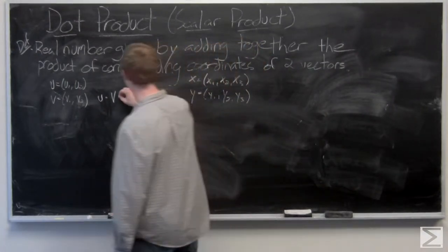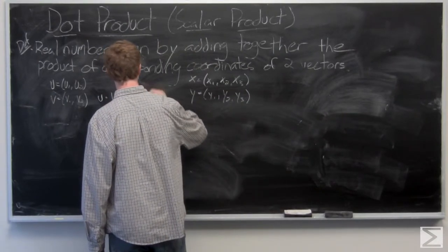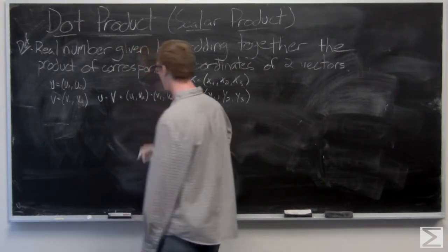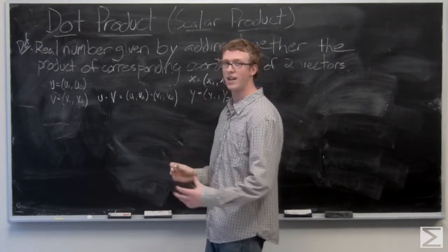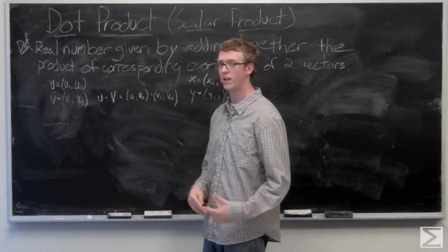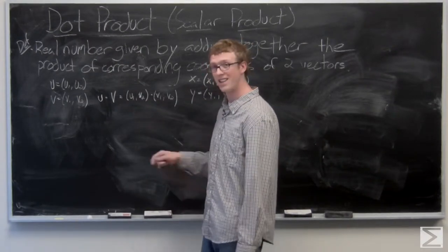So u dot v, u1 u2 dot v1 v2, and all you need to do, it's almost like distributing but not quite because you don't carry over everything. You multiply u1 times v1 and then add to that u2 times v2.